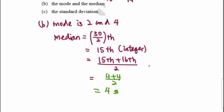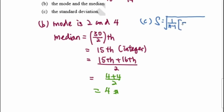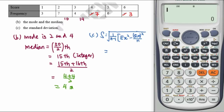Finally we find the standard deviation. The formula is: the square root of 1 over (n minus 1) times the sum of x squared, minus the sum of x all squared over n. We will use the calculator to help compute this.